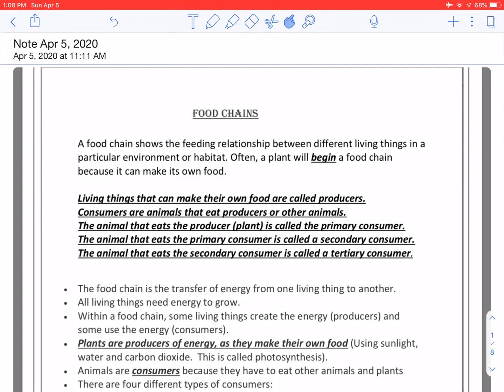So food chains. A food chain shows the feeding relationship between different living things in a particular environment or habitat. Often a plant will begin a food chain because it can make its own food.